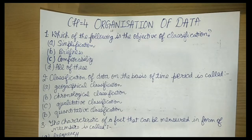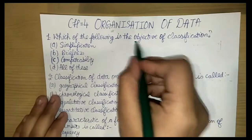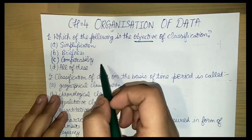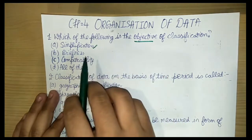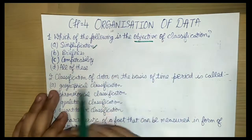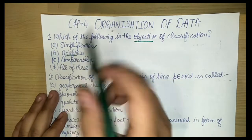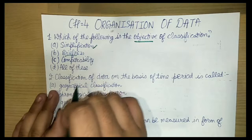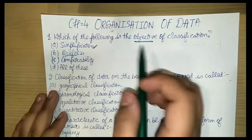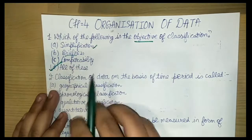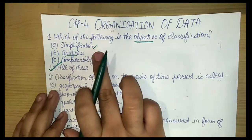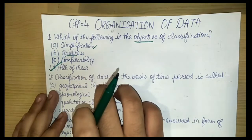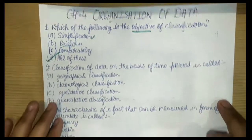The first question is: which of the following is an objective of classification? The objectives of classification are: first, simplification — our data gets simplified and we get a brief description in a small amount. Second, briefness — we get a brief description in a small amount. Third, comparability — it becomes easy to compare different data. So all of these — simplification, briefness, and comparability — are objectives of classification.